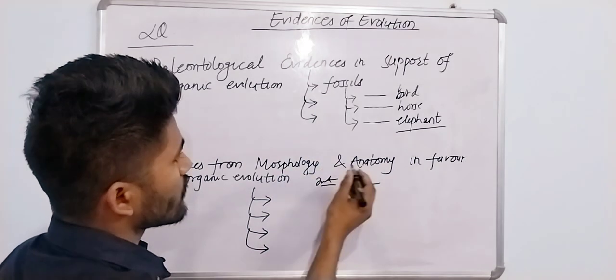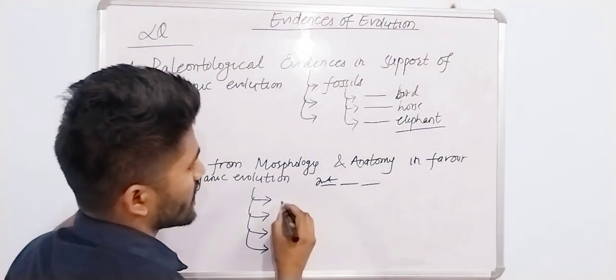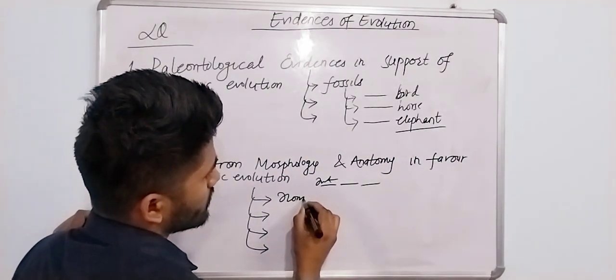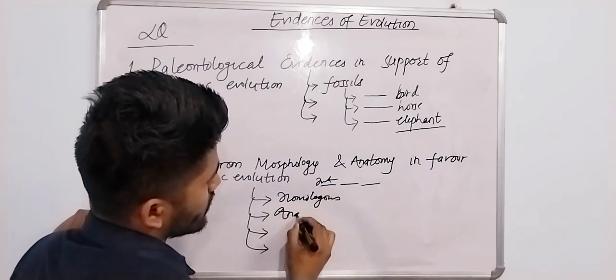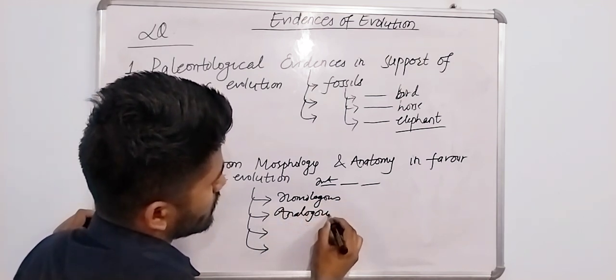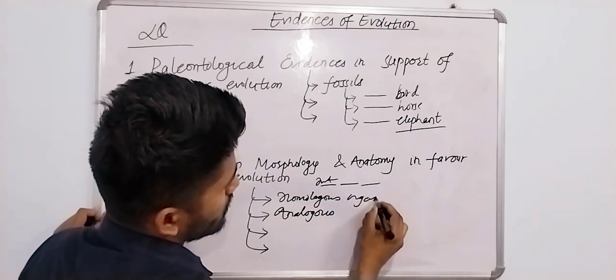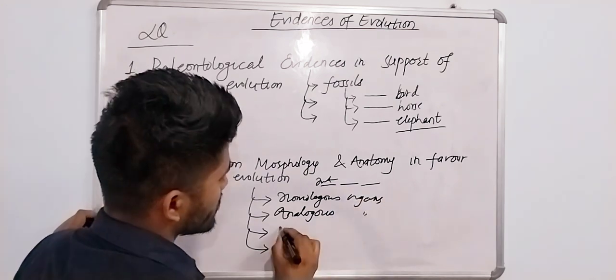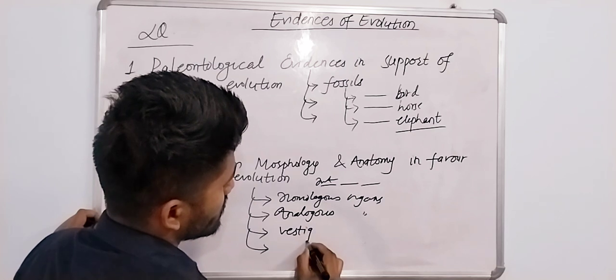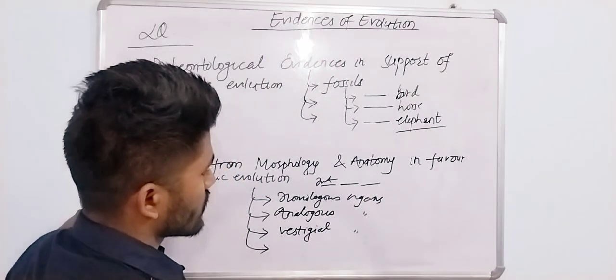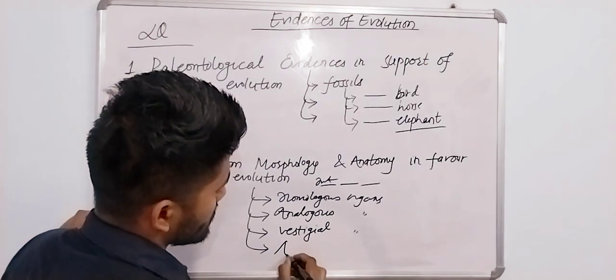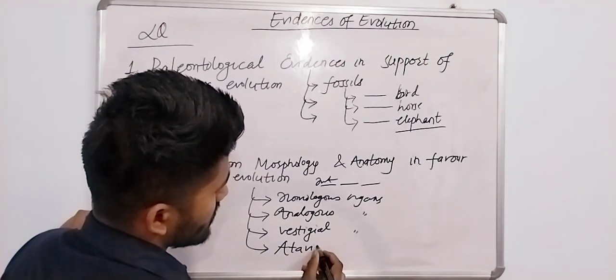The topics include homologous organs, analogous organs, and vestigial organs. Cover each of these - homologous organs, analogous organs, and vestigial organs with their explanations.